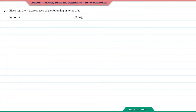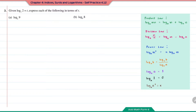Question number 3: Given log base 3 of 2 is equal to T, express each of the following in terms of T. We refer to logarithm laws to solve these. Question A: log base 2 of 9. First, convert this to log base 3, so it becomes log base 3 of 9 over log base 3 of 2.